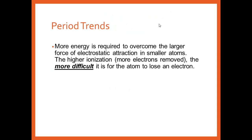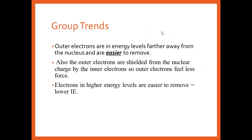What happens as you go across the period? Same reason as with sizes — you have more positives, the electrons are going onto the same energy level, being pulled tighter, they're smaller. If they're being pulled tighter, it's going to take more energy to remove them. So your ionization energy increases as you go across the period — greater attraction means more energy to remove that electron. Going down a group, those electrons are getting further and further away with more shielding, so they're easier to remove, meaning less energy needed. The ionization energy decreases as you go down a group. Don't just memorize arrows — we need to know the why of the trend.